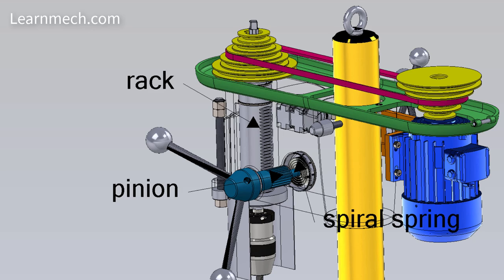A pinion engages a rack fixed on a sleeve to provide vertical up and down motion of the spindle and hence the drill, so that the same can be fed into a workpiece or withdrawn from it while drilling.